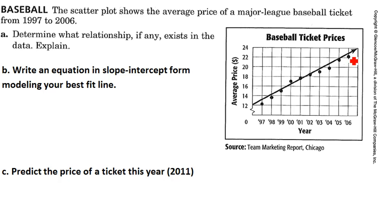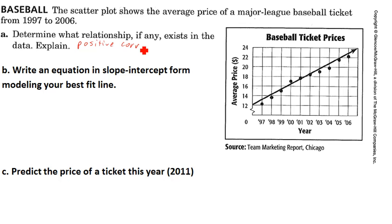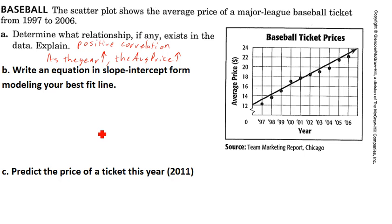So now that we've talked about the line, let's go ahead and determine the relationship. You may remember from a previous video that we talked about correlation. Here we notice that as the year increases — as we go to the right — the average price also increases. Hopefully you remember that's what we call a positive correlation: as x increases, the average price also increases.